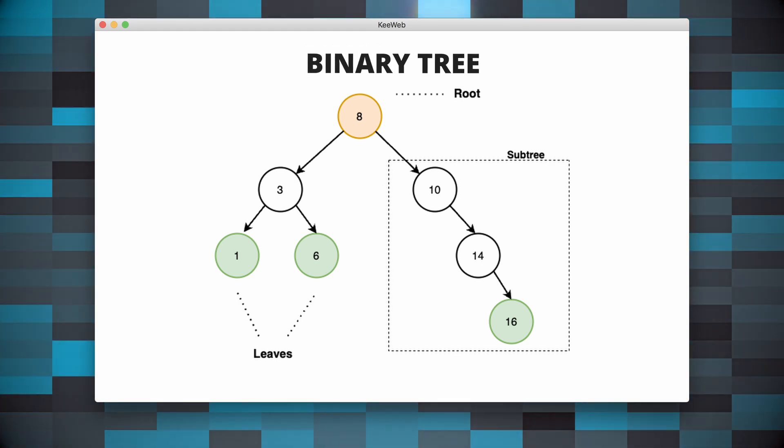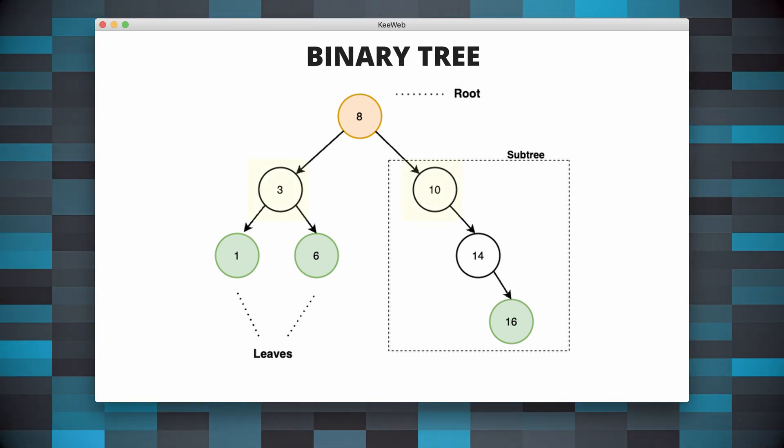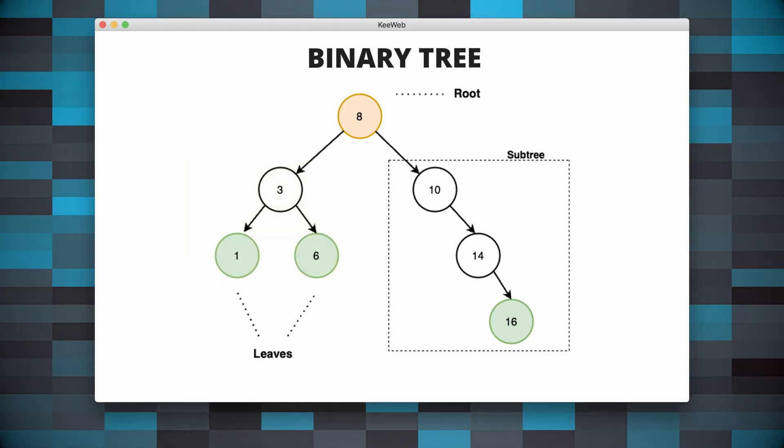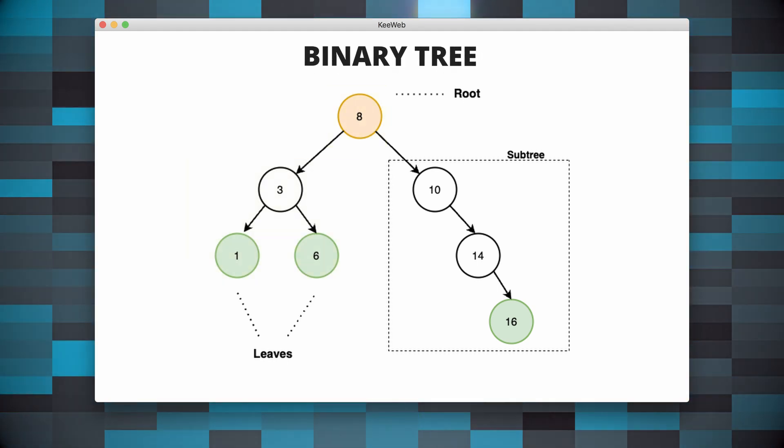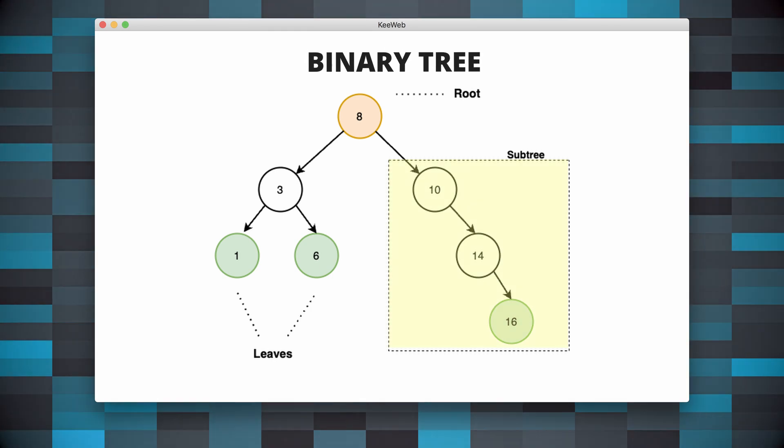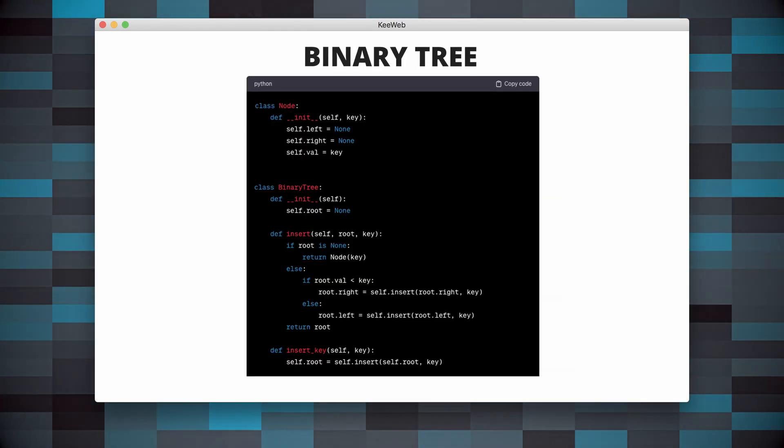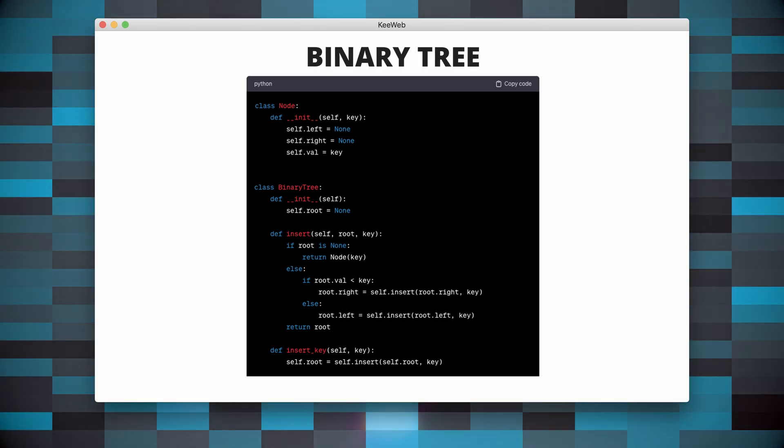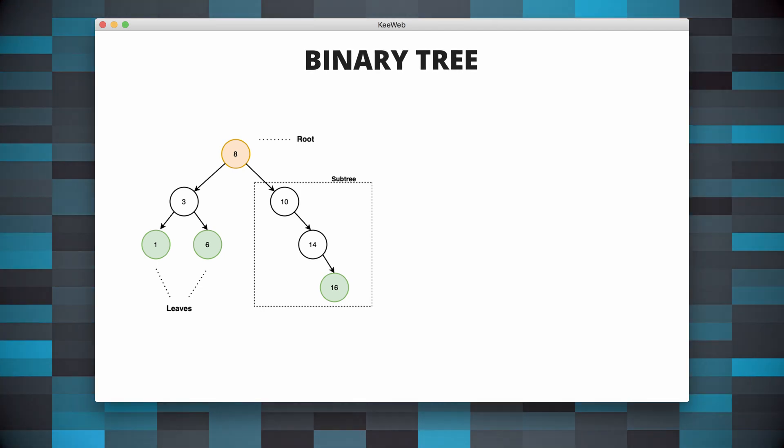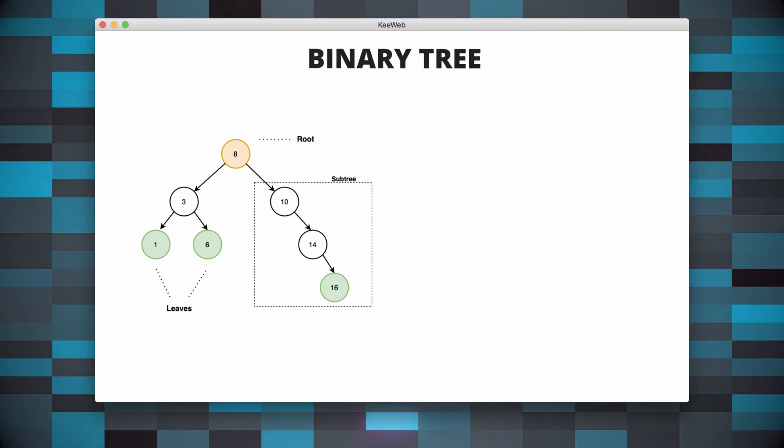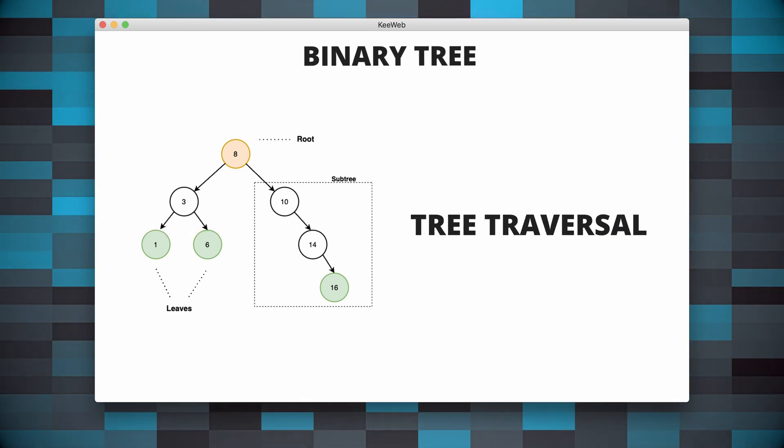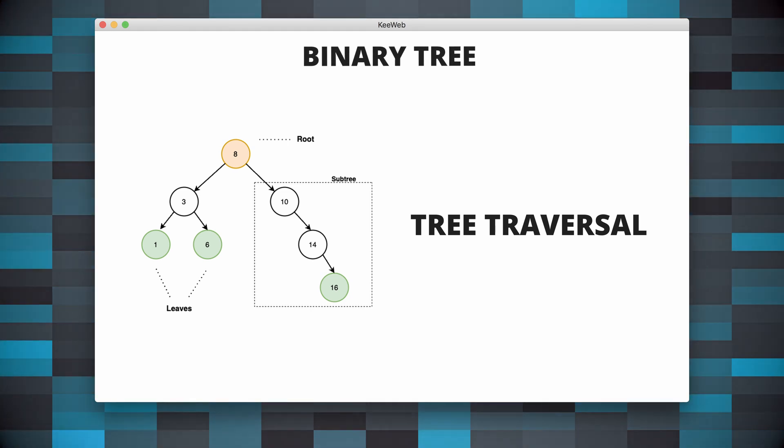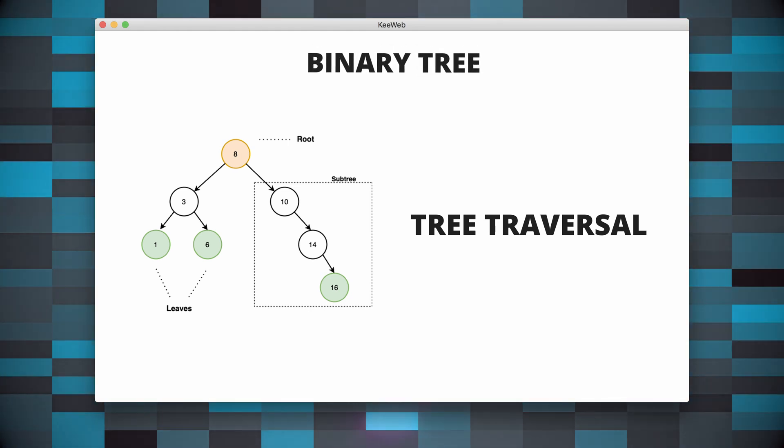What you need to remember here is that a BST has at most two children, and for each node all elements in its left subtree are less than the root node, and all elements in its right subtree are greater than the root node. In Python, there is no built-in binary tree data structure, but it can be easily implemented using classes. An important operation we need to mention when talking about binary trees are the various traversal methods.